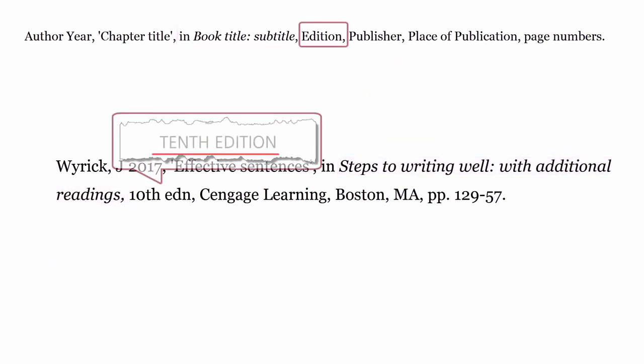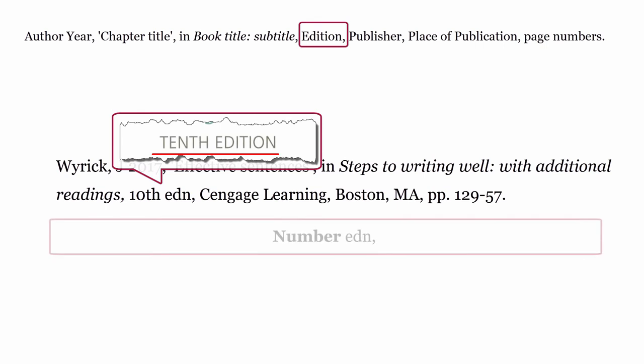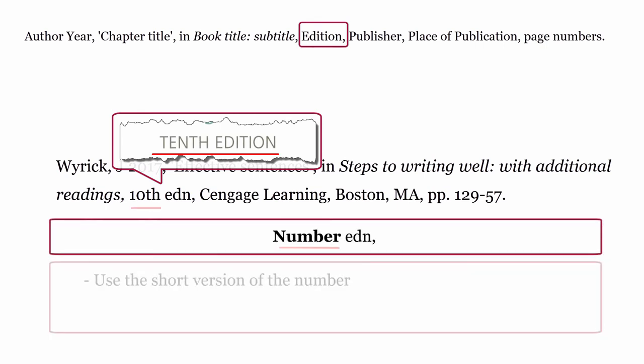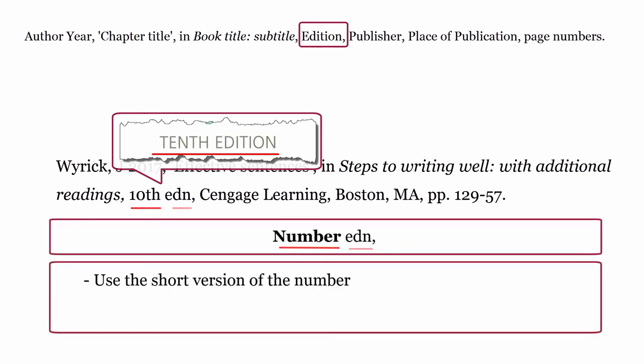Edition: the edition is formatted using the short version of the number, followed by an abbreviation of the word edition, written here as EDN, then a comma.